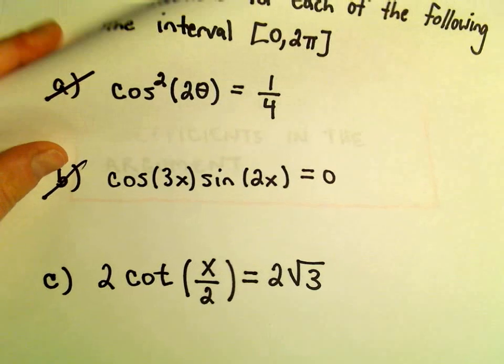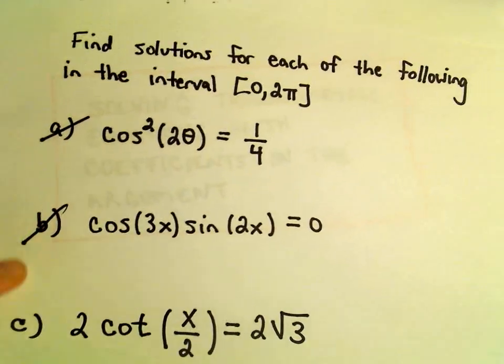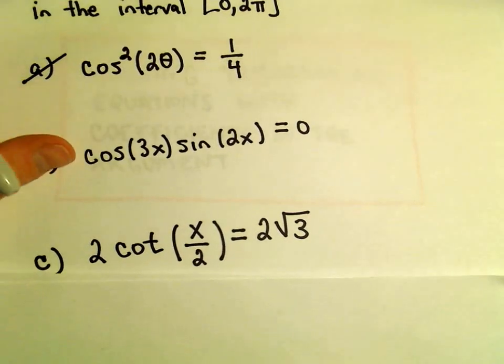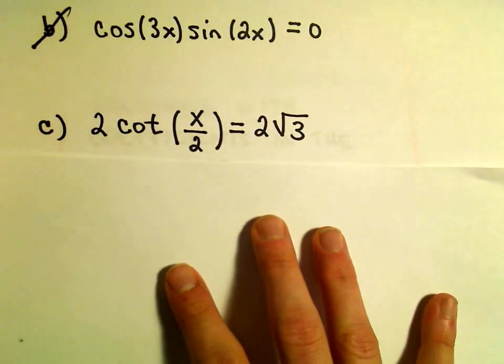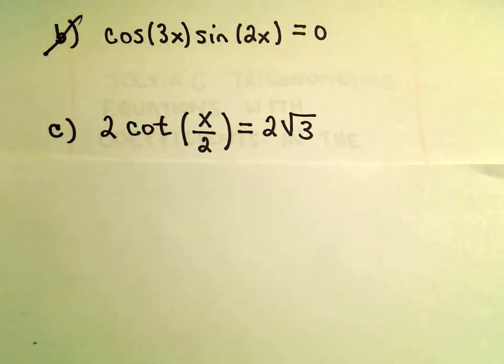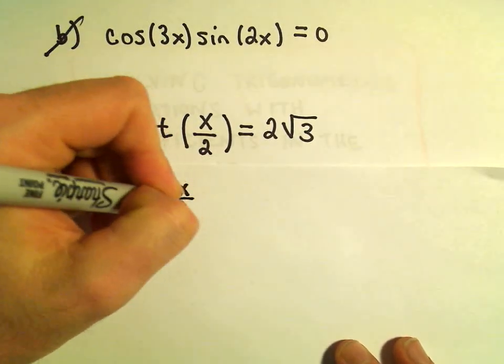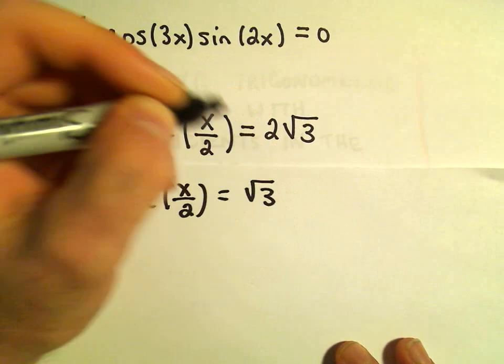The first thing I'm going to do is simply get rid of the 2 by dividing both sides by 2. So if we divide both sides by 2, we'll just be left with cotangent of x over 2 equals root 3.